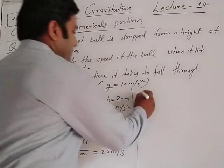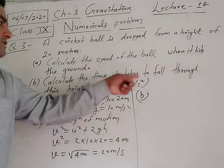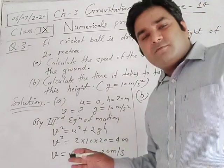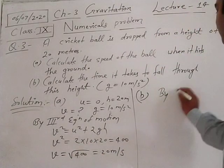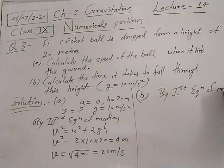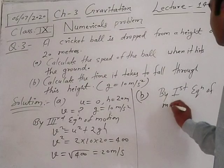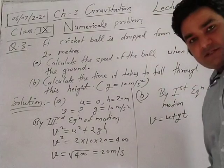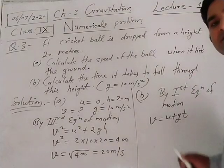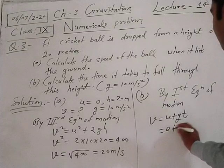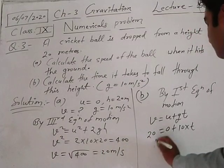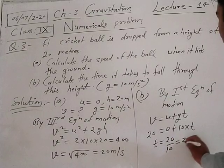For part B, calculate the time it takes to fall through this height — we find T. For time we use the first equation of motion: V equals U plus gT. Since the body is falling downward, U = 0, so 20 equals 0 plus 10 times T. Therefore T equals 20 upon 10, which equals 2 seconds. Easy solution — when your formula concept is clear, you can solve it easily.